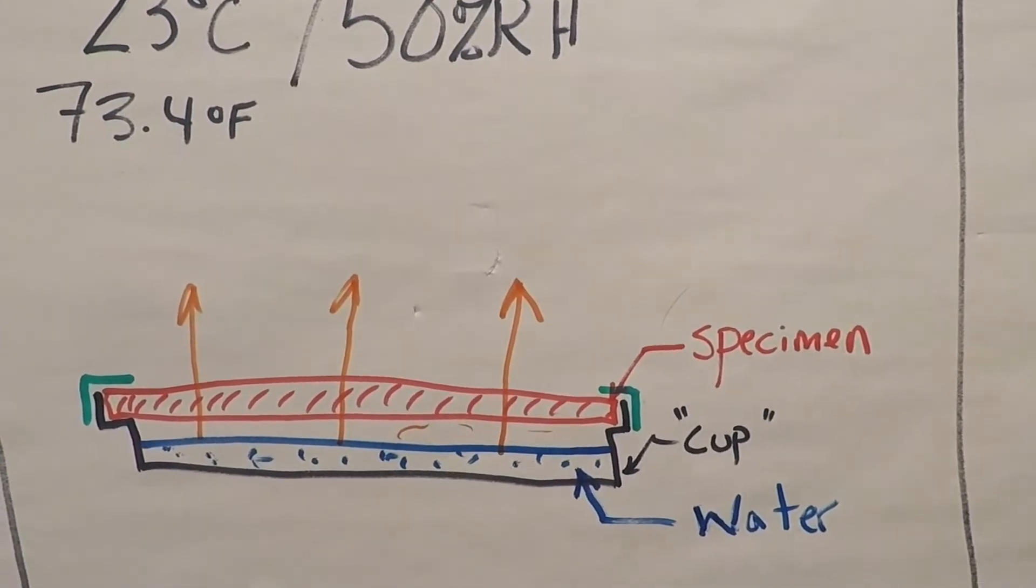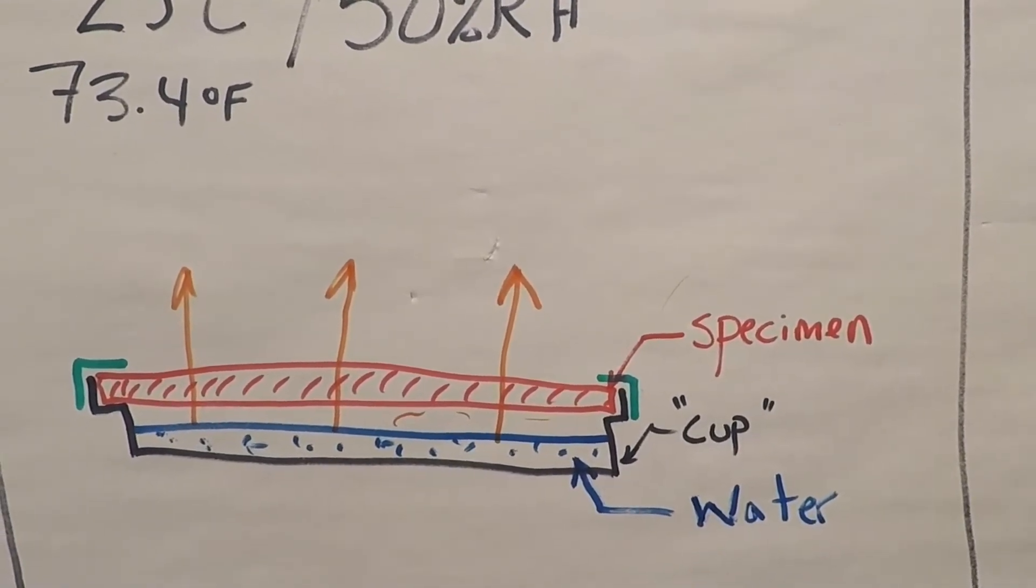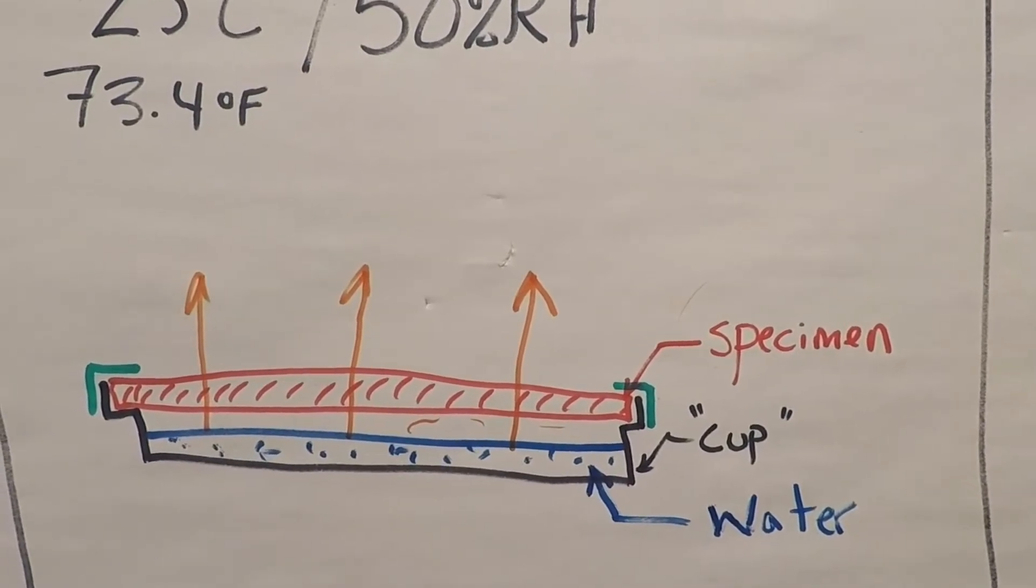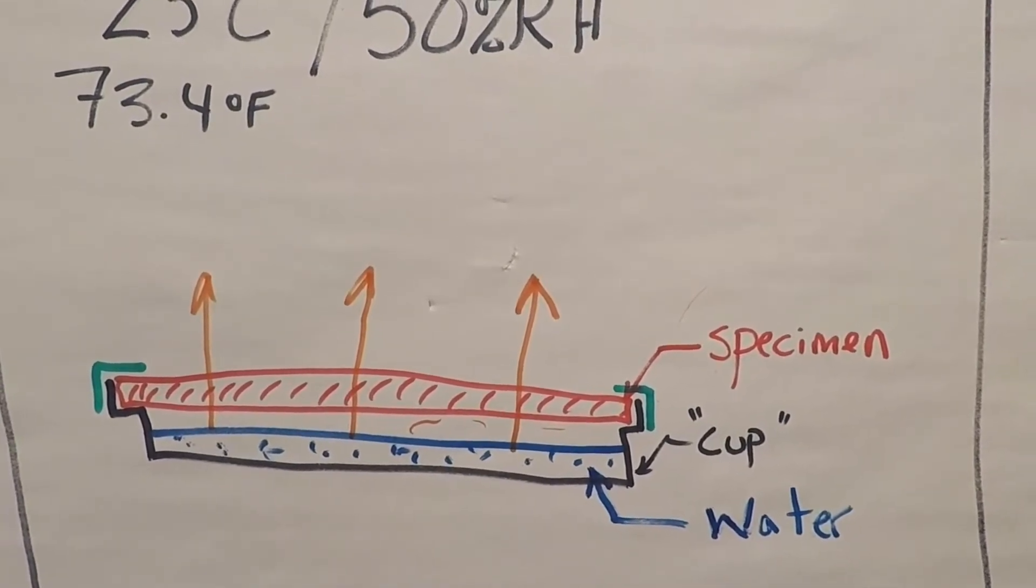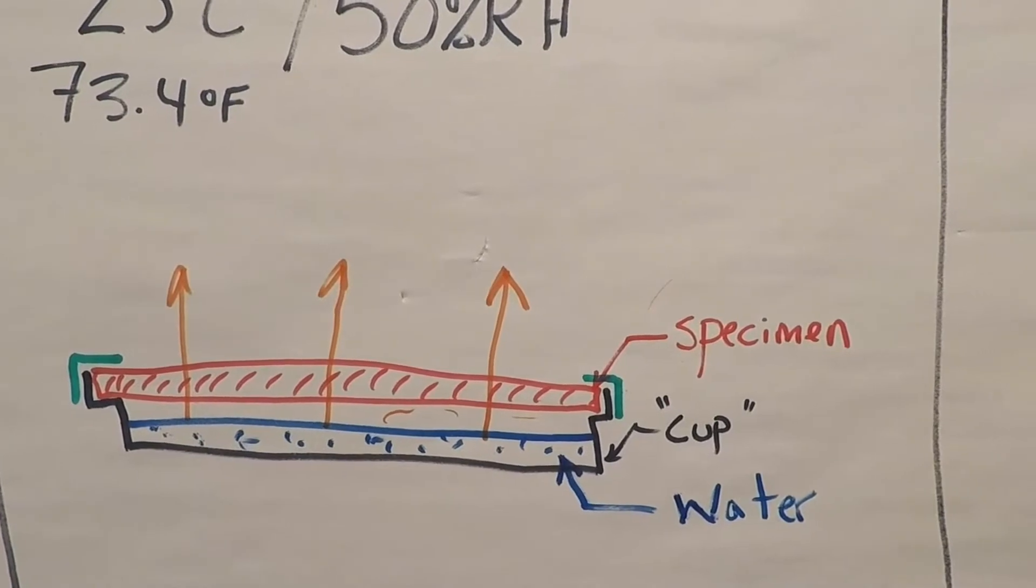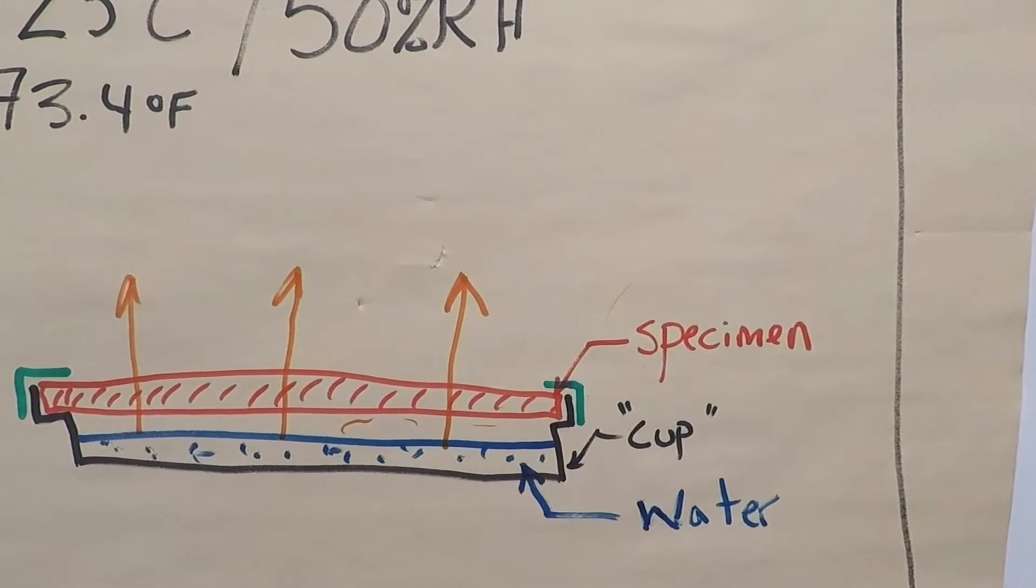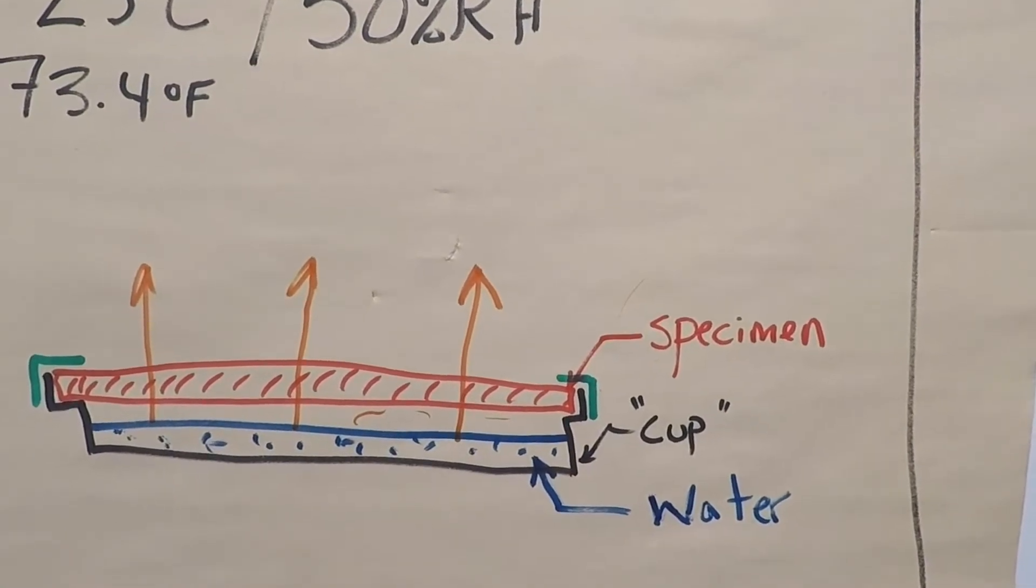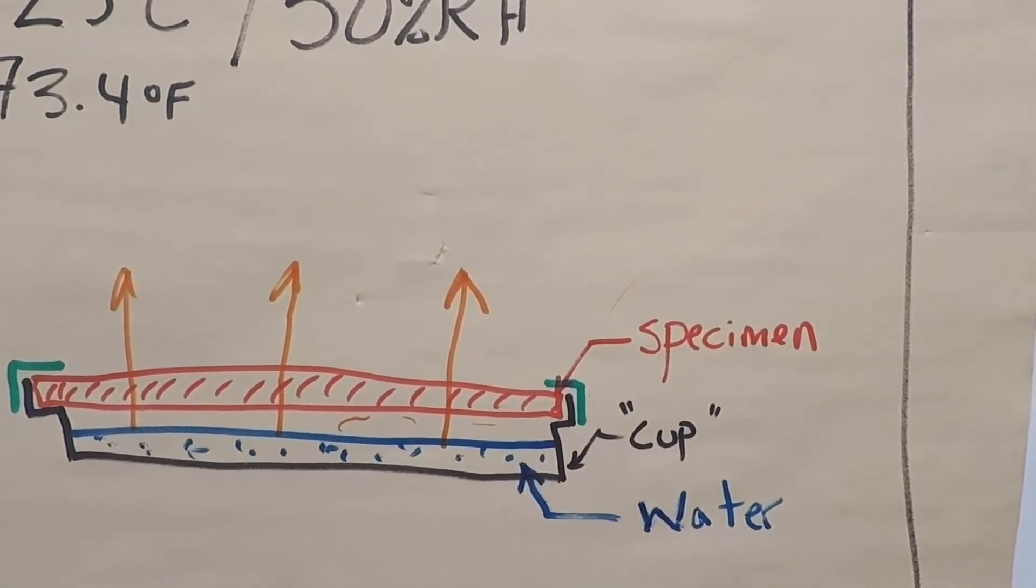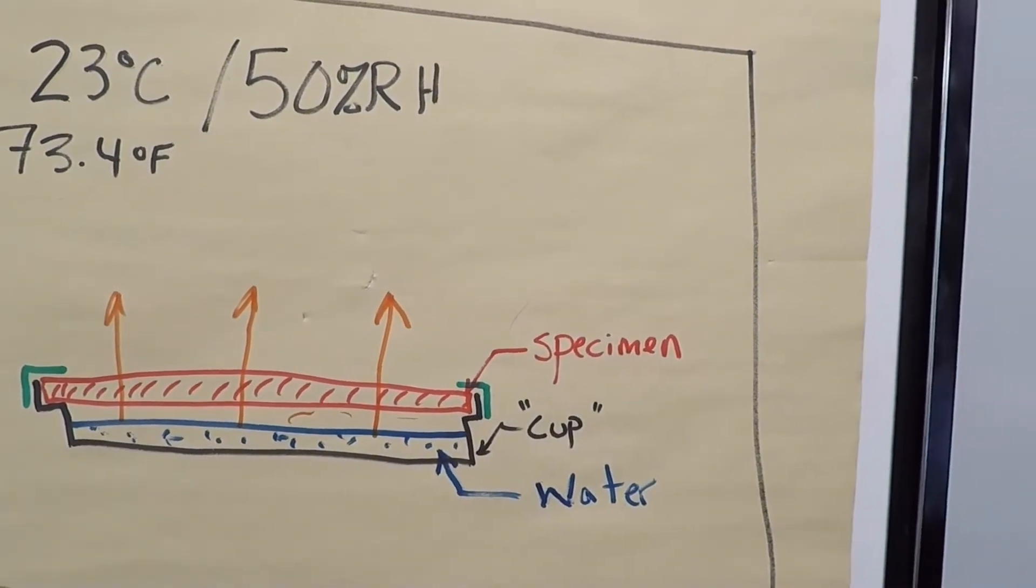We measure the weight of the entire specimen and cup and water from time to time under the assumption that any change in mass or change in weight is caused by water vapor diffusion, with water vapor leaving this specimen. So that's a basic starting point.